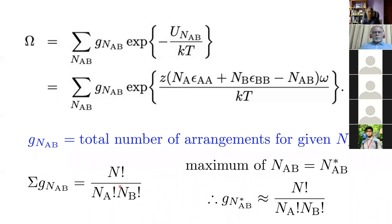Substituting for U from the previous result: G(N_AB) is simply the total number of arrangements for a given value of N_AB — the degeneracy of that state — i.e., how many states have exactly the same number of N_AB bonds and the same energy. The total number of arrangements for a mixture of N_A and N_B atoms is N! divided by N_A! times N_B!, as in our earlier example.